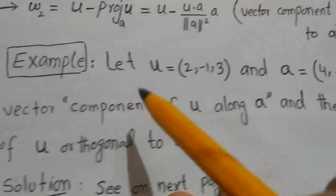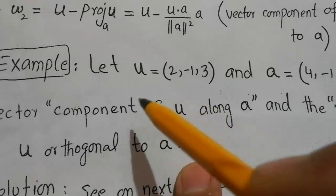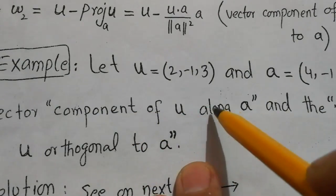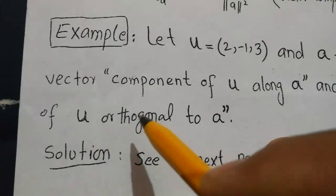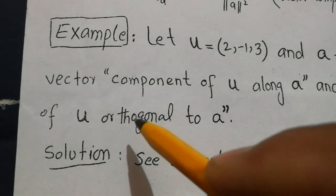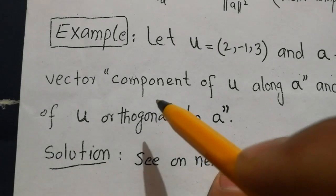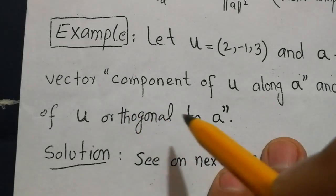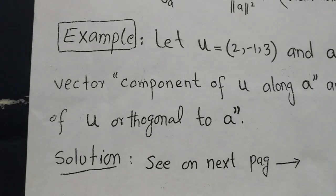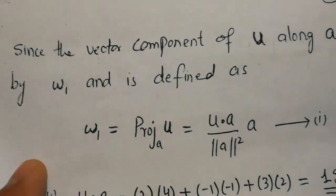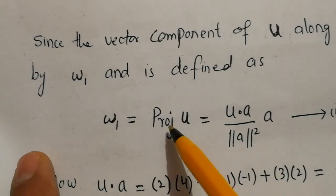The question is: given u and a, find the vector component of u along a — that is w1 — and the vector component of u orthogonal to a, which means perpendicular. We need to find the component that is the shadow of u perpendicular to a, which is w2. By the projection theorem, w1 equals the projection of u along a.